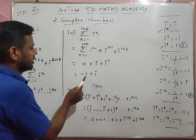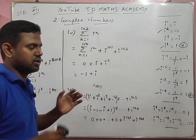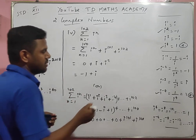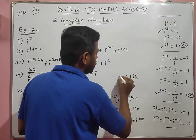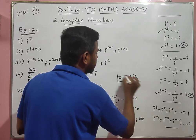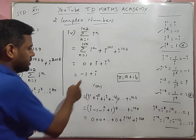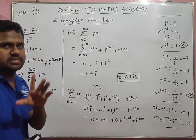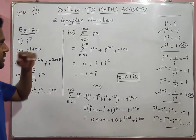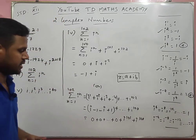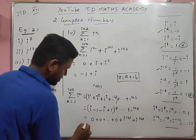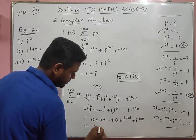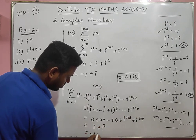This is also a complex number. You have to always write a complex number in the form a + ib. The answer is minus 1 plus i. The real part is minus 1 and the imaginary part is i, so the answer is minus 1 plus i.